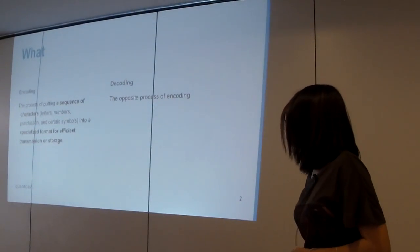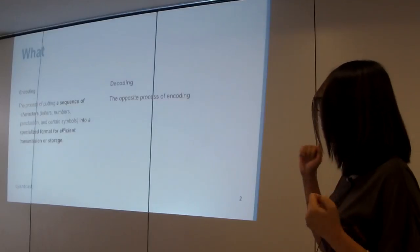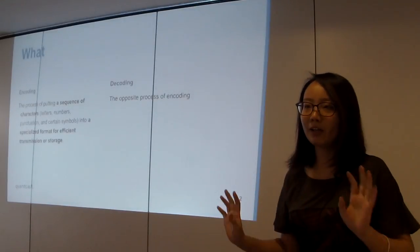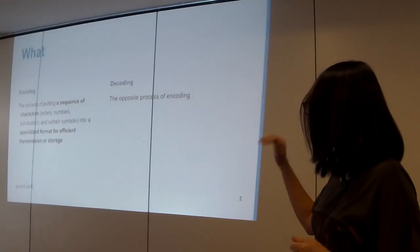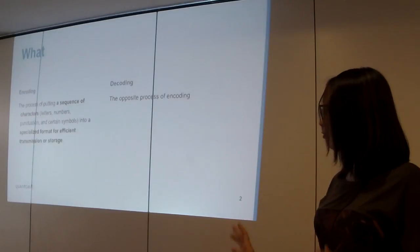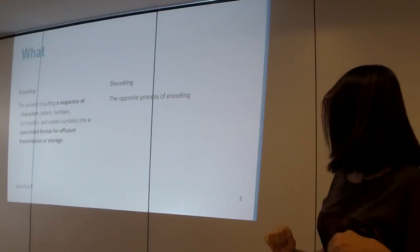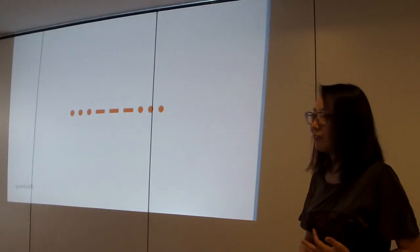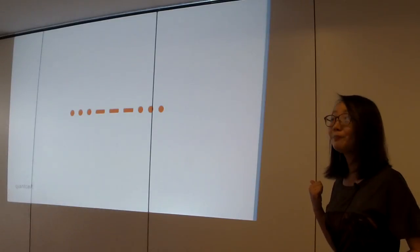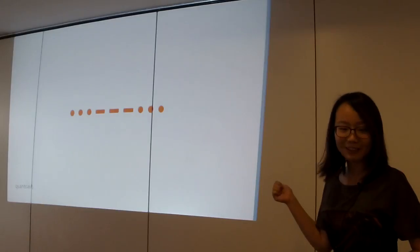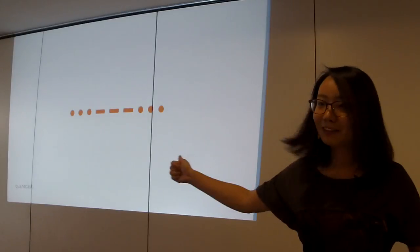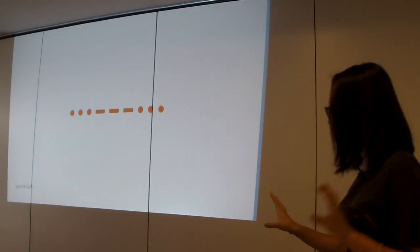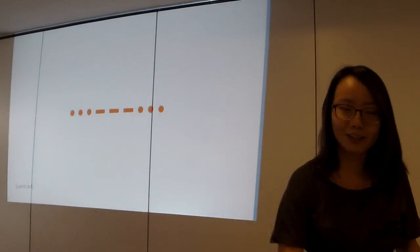Anyway, so what is character encoding? This is just the dry definition. Encoding is a process of putting a sequence of characters, including letters, alphanumeric and underscore symbols, into a specialized format for efficient transmission or storage. Decoding is the reverse process. I know you're not interested in that dry definition. Who knows what this is? Morse code. SOS. Yes. So this is character encoding. In a way, we encode three characters into this signal.